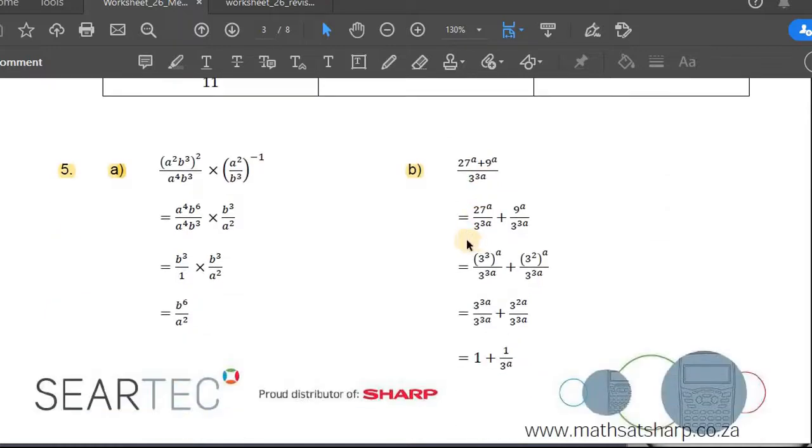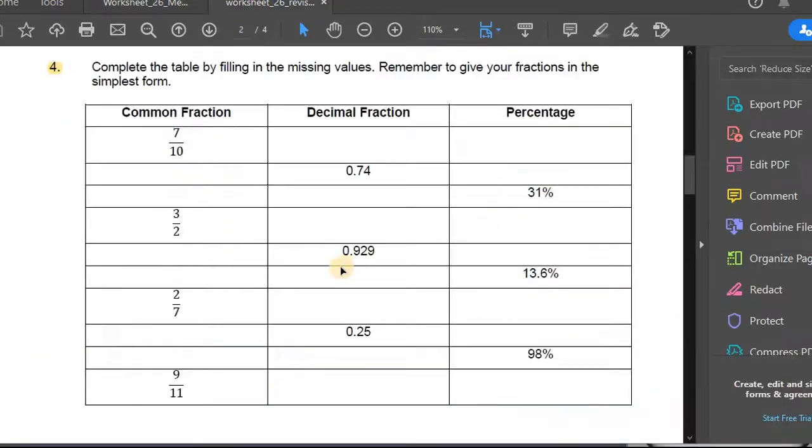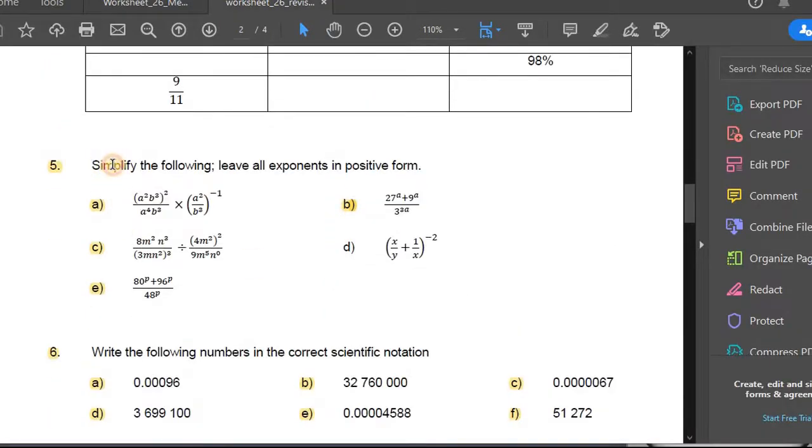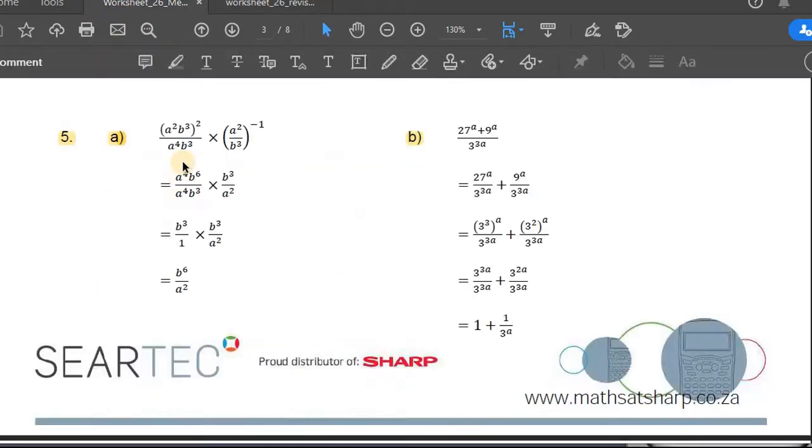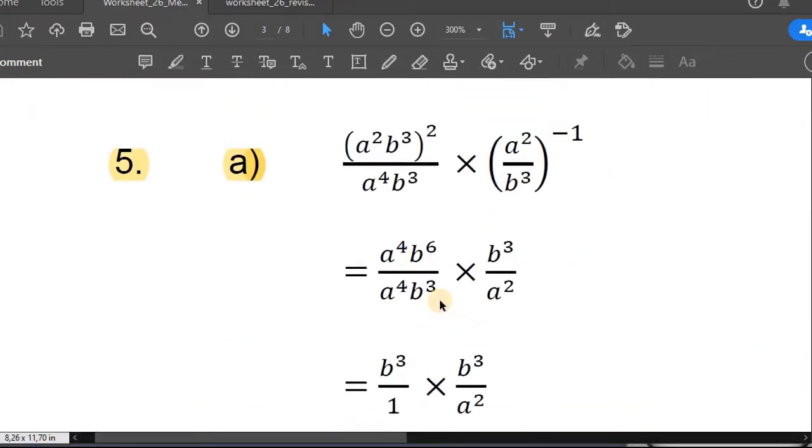Okay, number five. Now let's look at the question. Simplify the form. All right, let's zoom into part a.